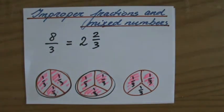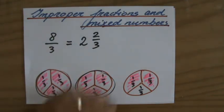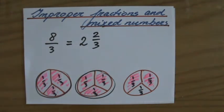So 8 over 3 equals 2 and 2 over 3. 2 and 2 over 3 is the mixed number that belongs to the top-heavy fraction 8 over 3.